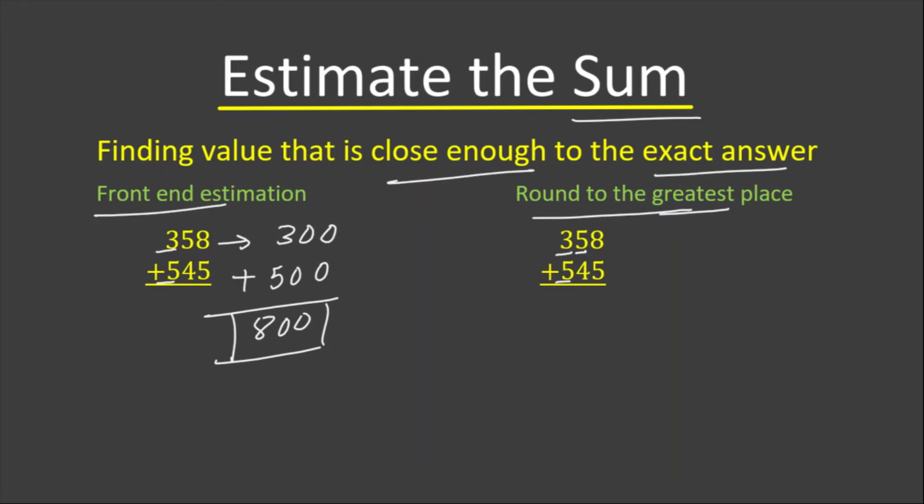We look at the number in the tens place. If it is five or more, we round up. If it is four or less, we round down. Because it is five, we round up, so the number rounds to 400.